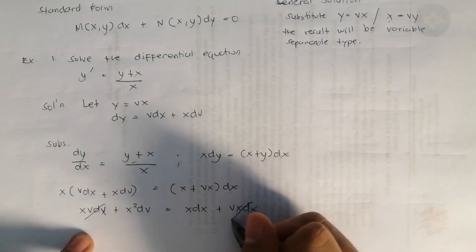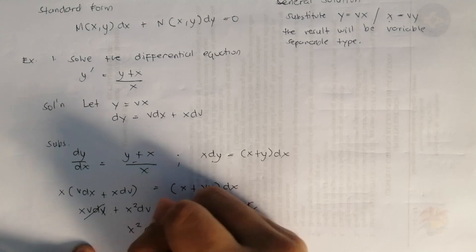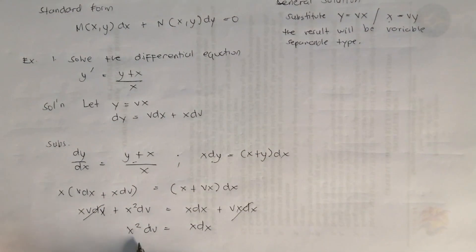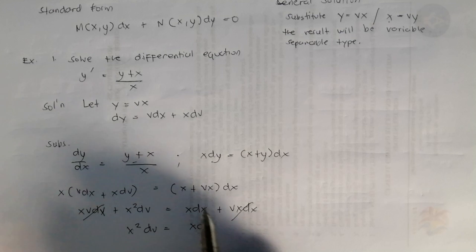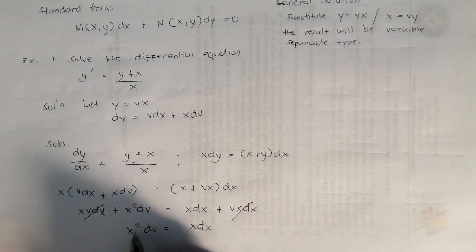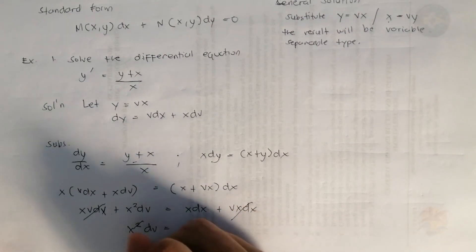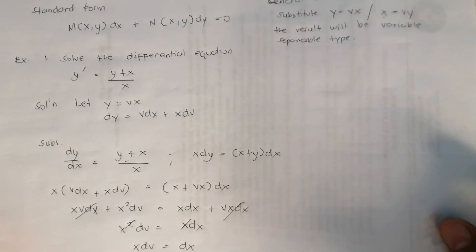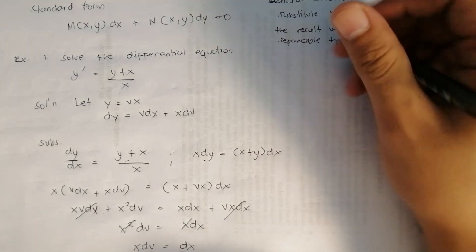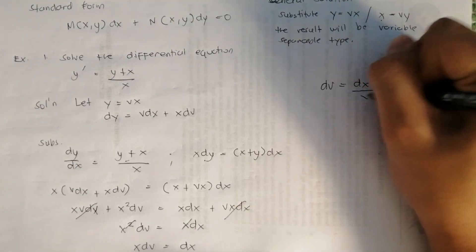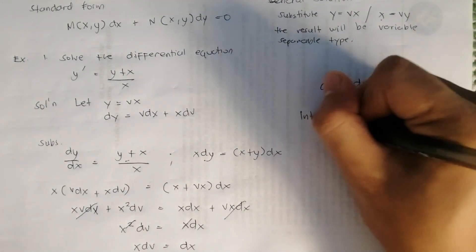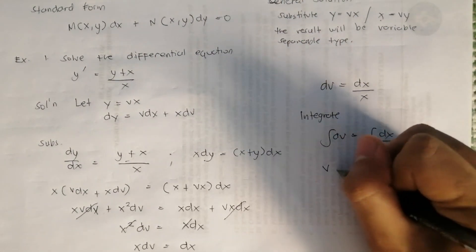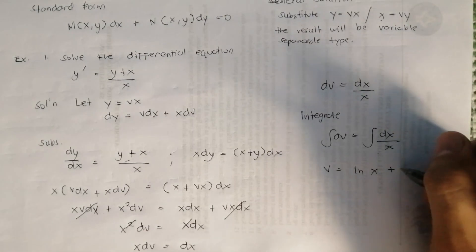Cancelling vx dx from both sides gives x² dv equals x dx. This is now a variable separable equation — we can separate x and v. Dividing both sides by x² and cancelling gives x dv equals dx, so dv equals dx over x.